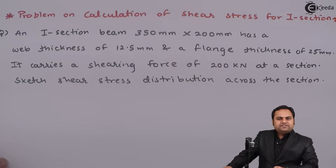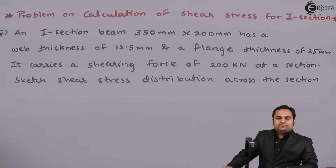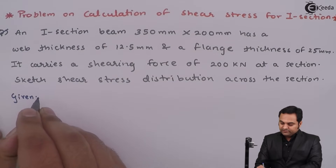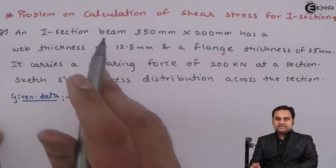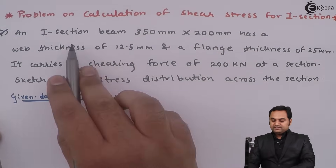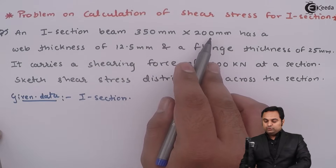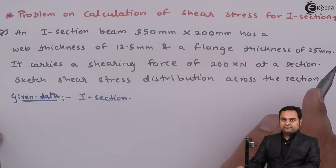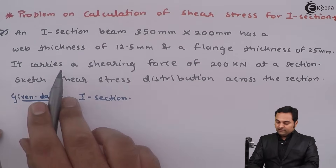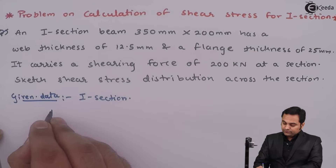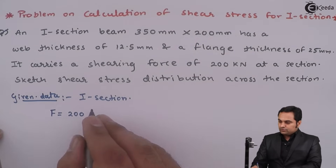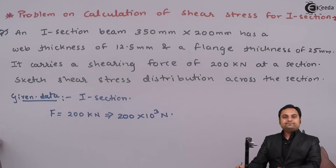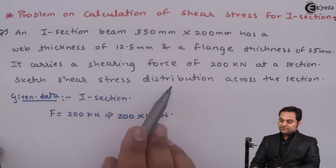In this video we will see a problem on calculation of shear stress for an I-section. The question data: an I-section beam 350 mm into 200 mm has a web thickness of 12.5 mm and flange thickness of 25 mm. It carries a shearing force F of 200 kilo Newton, that is 200 × 10³ Newton. We have to sketch the shear stress distribution across the section.